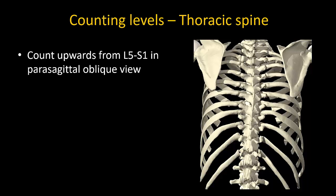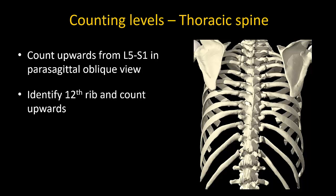First, if you are already familiar with lumbar spine scanning, you can identify the L5S1 intraspace using the parasagittal oblique view and count upwards from there. Second, you can identify the lowermost rib, assume it is the twelfth rib, and count upwards from there.